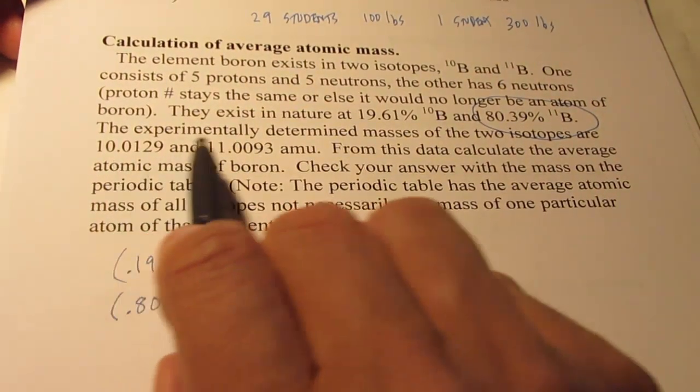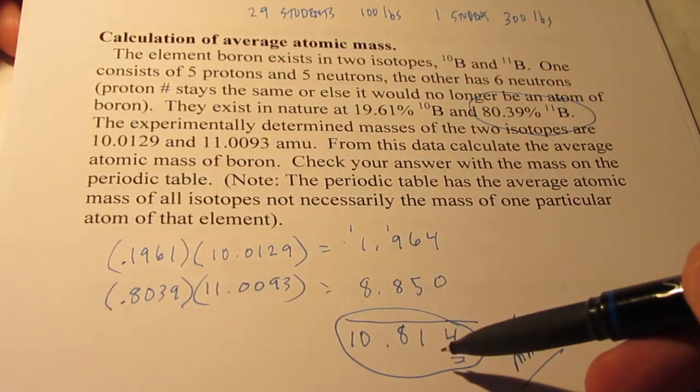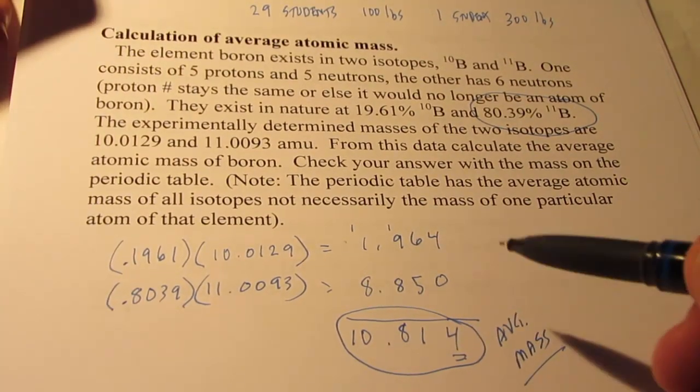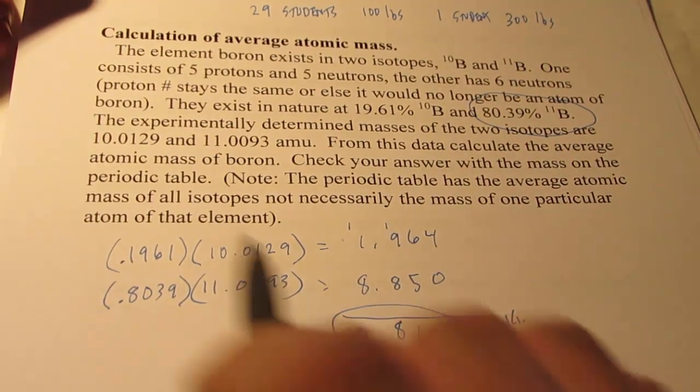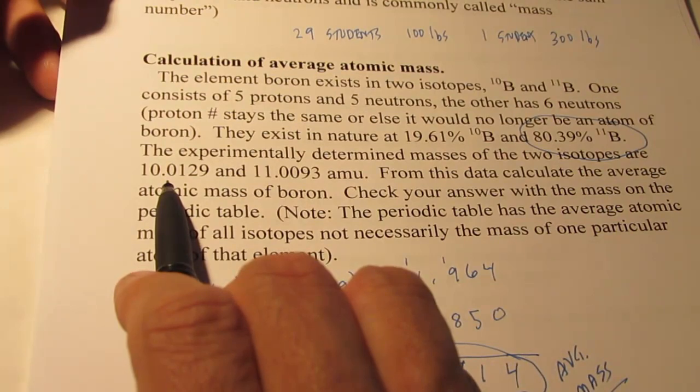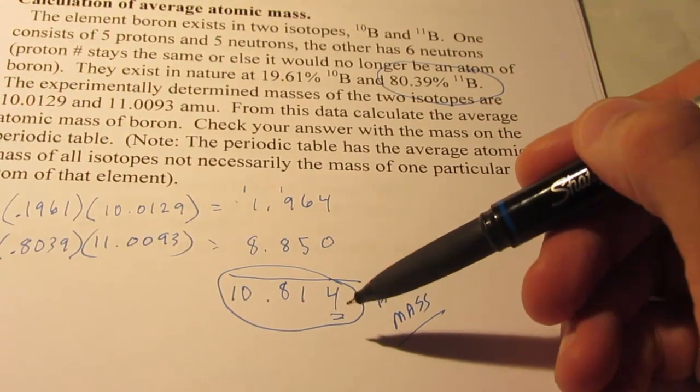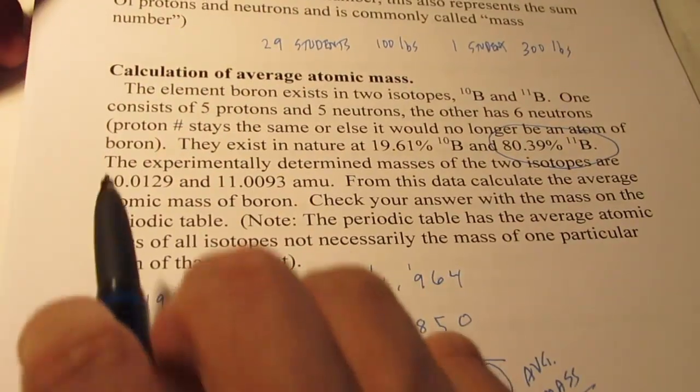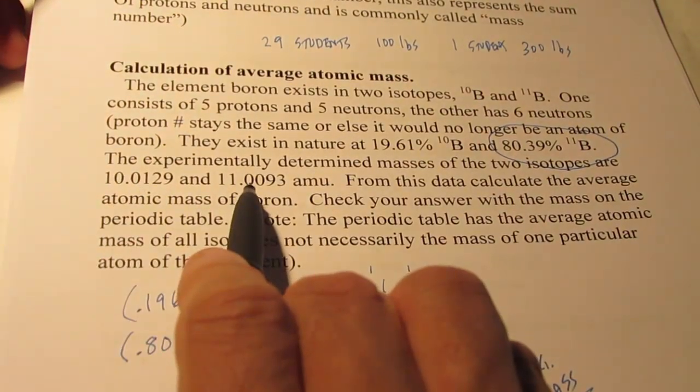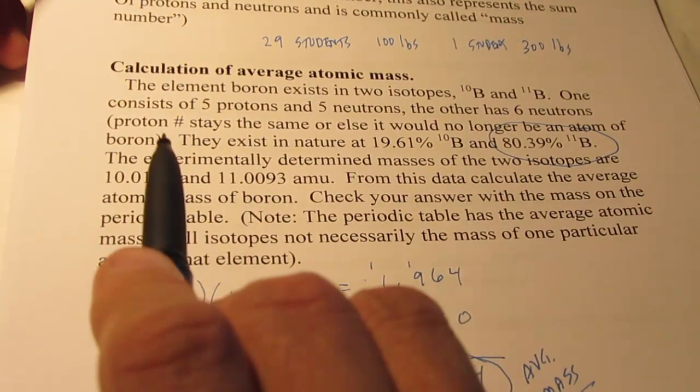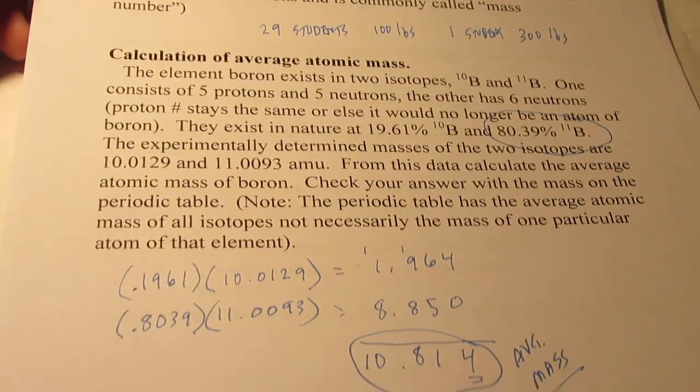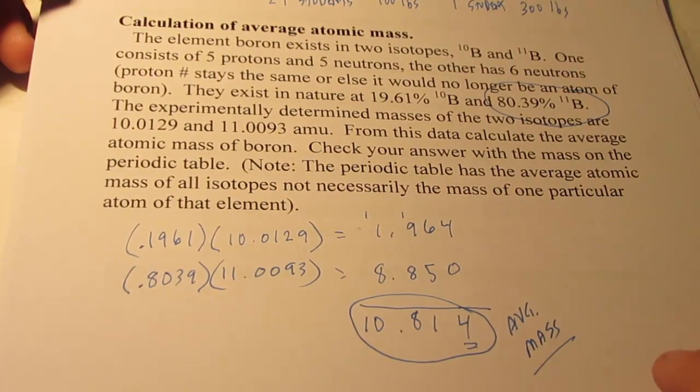Notice, neither of the isotopes of boron has that mass. Not one of them do. There's really not a boron atom that weighs that much. They either weigh 10.0129 or 11.0093. This represents the average. Please take note, I did not add these up and divide by two like many of you will do. Please pay attention to the process by which I did this.